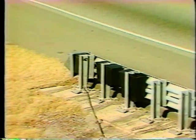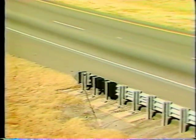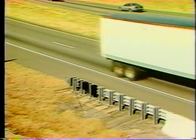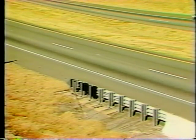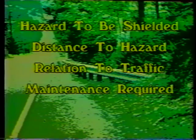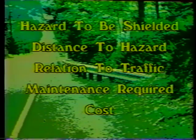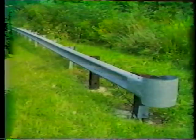When designers survey a location for a traffic barrier, they base their recommendations on six major considerations: the type of hazard to be shielded from, the available distance between the barrier and the hazard, how the barrier will be located in relation to traffic, required maintenance, the estimated cost of installing and maintaining the system, and the type of systems in use by the highway agency in question.